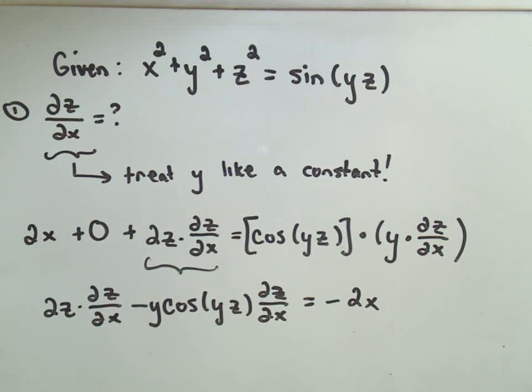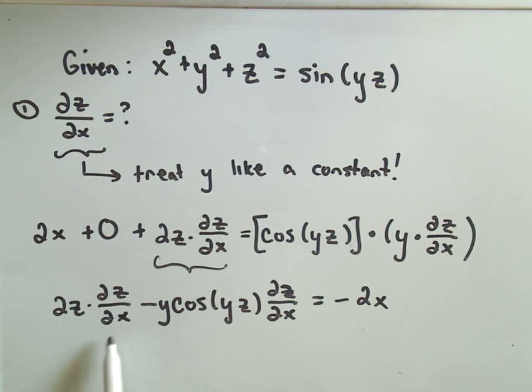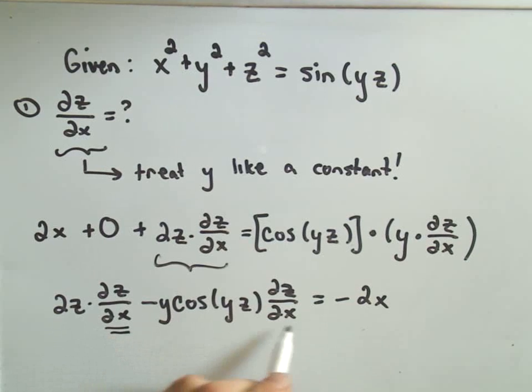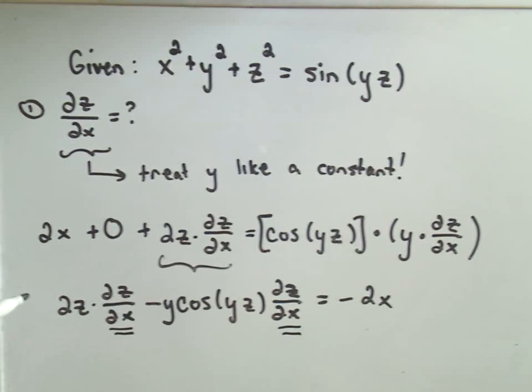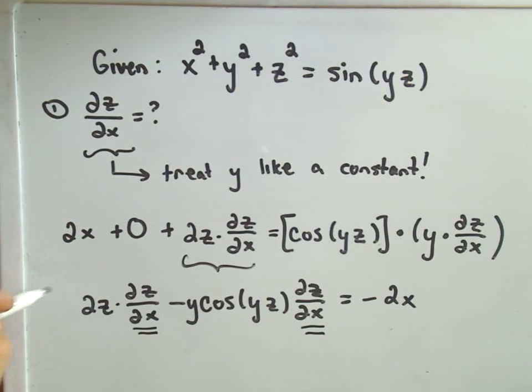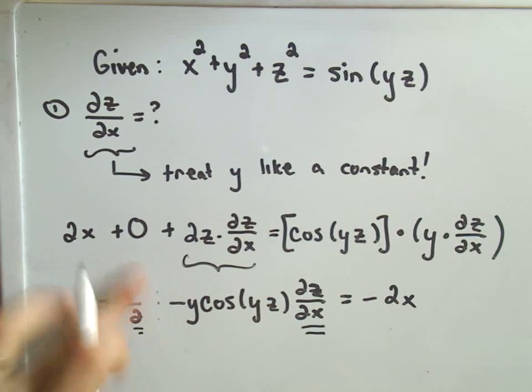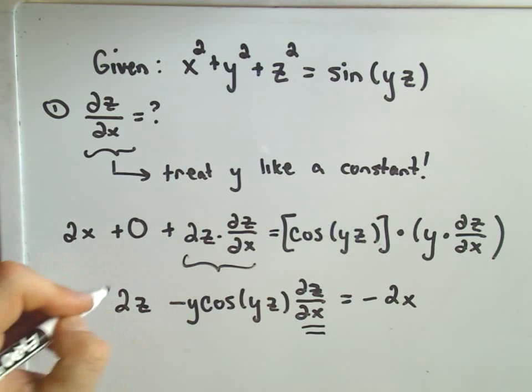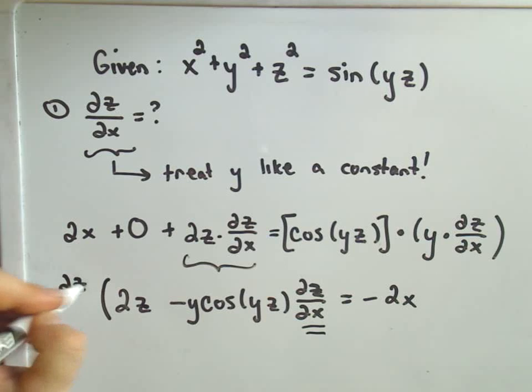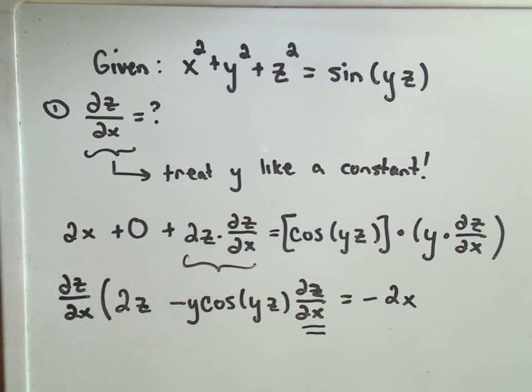And now we're almost there. The whole reason of putting all the partial of z's with respect to x on the left side is that we could simply factor it out. So if I pull this out front, so I'd have the partial of z with respect to x out front. And I'll also factor it out of that second term. Okay, easy enough.